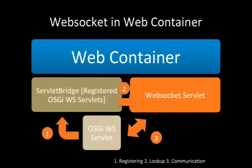These are the steps. First, during the activation, the OSGi WebSocket servlet is registered to the servlet bridge — the extended servlet bridge. When we receive a request to open a WebSocket channel, it ends up first in the standard WebSocket servlet. What this servlet does is look up the handler in the bridge map, and once it finds it, it processes the request to the servlet. This is how it works — simple.